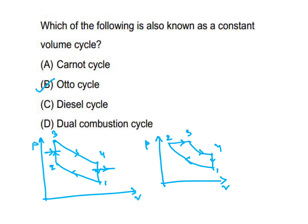In the Diesel cycle PV diagram, there is constant pressure heat addition. In the dual cycle, both constant volume and constant pressure heat addition occur: process 2-3 is constant volume heat addition and process 3-4 is constant pressure heat addition.